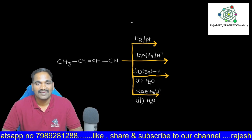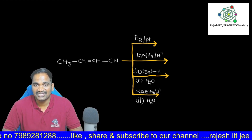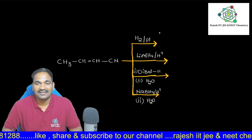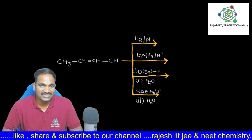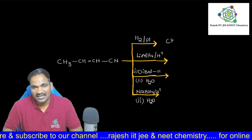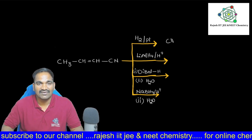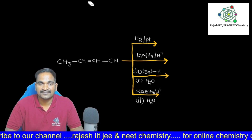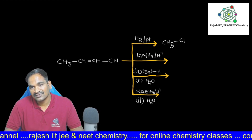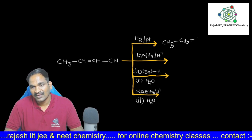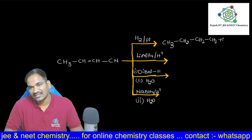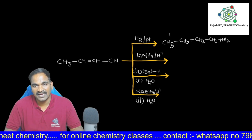First, I am taking catalytic hydrogenation — that means H₂ with platinum catalyst. With catalytic hydrogenation, the double bond will be reduced and the cyanide will be converted into a primary amine. So here you see CH₃-CH= will become CH₃-CH₂-CH₂-NH₂, because it reduces the double bond as well. That means it is giving primary amines.